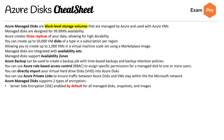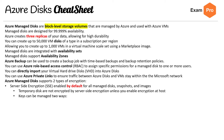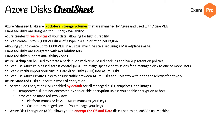Azure managed disks support two types of encryption. You have SSE (server-side encryption) by default, and temporary disks are not encrypted by server-side encryption unless you enable encryption at the host — remember that exception. There are two types of keys that can be managed: platform-managed keys and customer-managed keys. Azure Disk Encryption allows you to encrypt both the OS and data disks using an Azure virtual machine. For Windows, it uses BitLocker; for Linux encryption, it uses DM-Crypt.